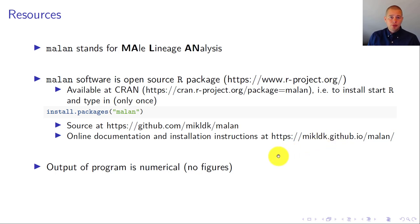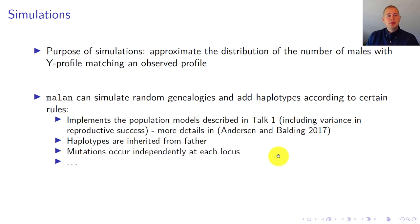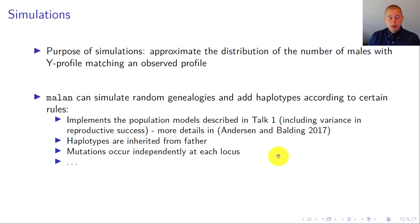The output of the Malan software is mainly numerical, so there are no figures. The figures in this talk are made by an external function and are not part of the Malan software. The purpose of simulating populations is to approximate the distribution of the number of males with a Y-profile matching that of an observed profile. Malan can simulate random genealogies and add haplotypes according to certain rules, including population models with variants in reproductive success.